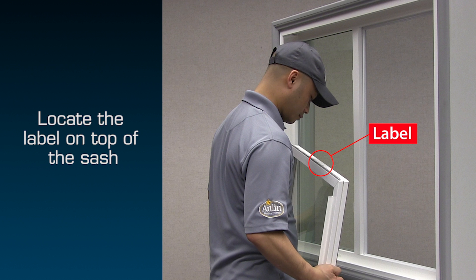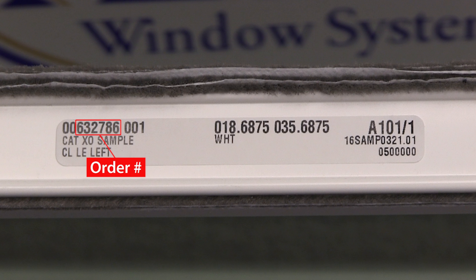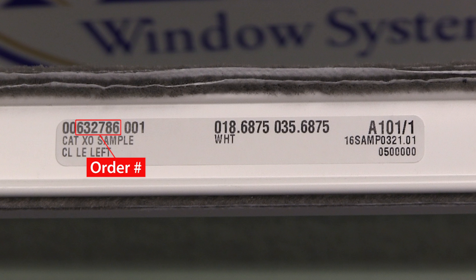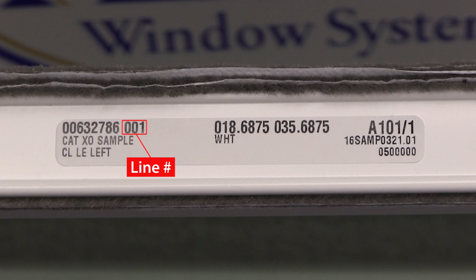If your window was manufactured before 2012, you may find the label on the bottom of the sash. In the upper left-hand corner of the label, you'll find the six-digit order number. The following three-digit number indicates the line number, which identifies this window. In this case, the order number is 632786 and the line number is 1.